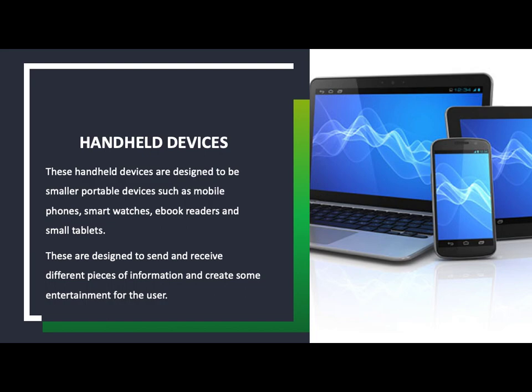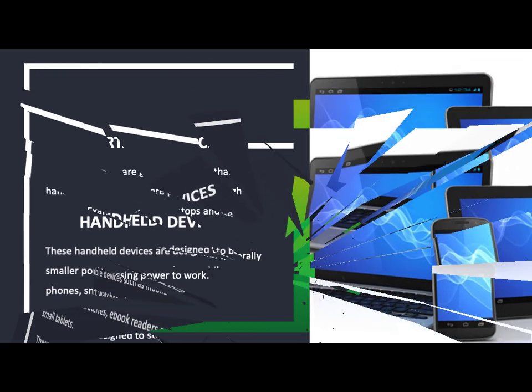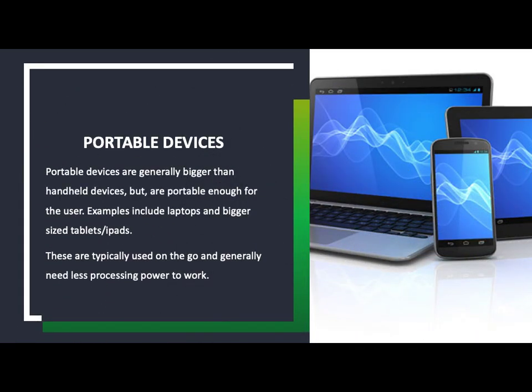For example, if you travel to an incident and need to record what's happening, you can record it and send it back to head office, or take a still image and do the same. Portable devices are generally bigger and allow you to do a lot more, such as writing reports, sending large emails, reviewing and editing video footage — things you'd use a laptop or larger tablet or iPad for.